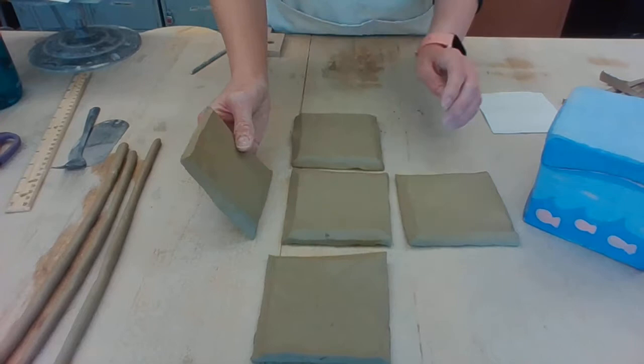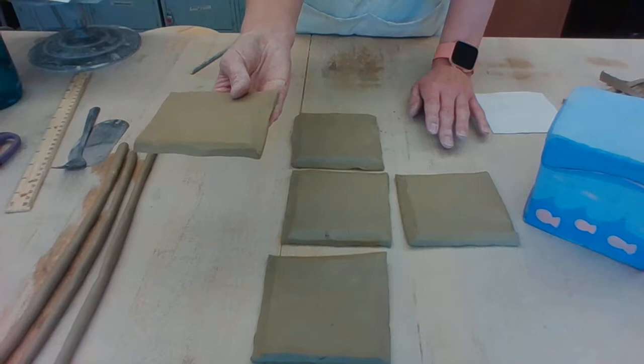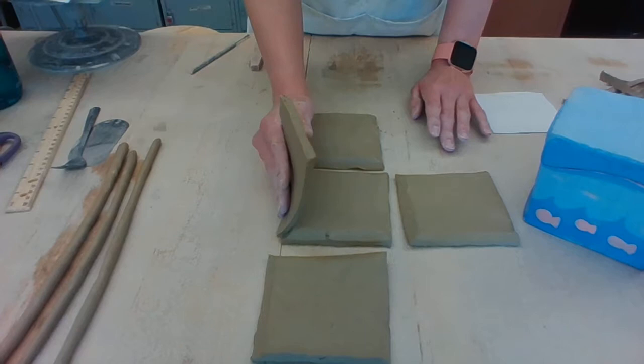So since this is fresh clay, we don't want to just attach it right away because look what happens to the wall. It falls over, right? So we're going to want to leave these clay slabs out for maybe 10-15 minutes in room temperature or 5-10 minutes in the heated drying cabinet so that way they could stiffen up a little bit so it holds its shape when we attach.